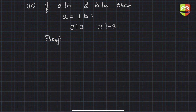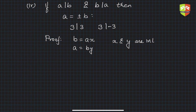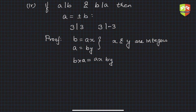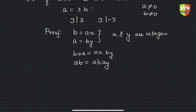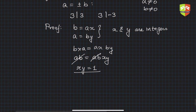Proof: by definition, b = ax and a = by, where x and y are integers. Multiplying both equations together: ab = ax times by = abxy. Since neither a nor b can be 0 (division by 0 is not allowed), we can cancel ab from both sides to get xy = 1.